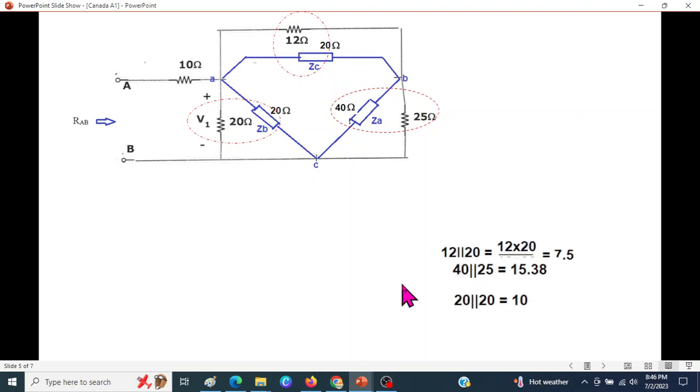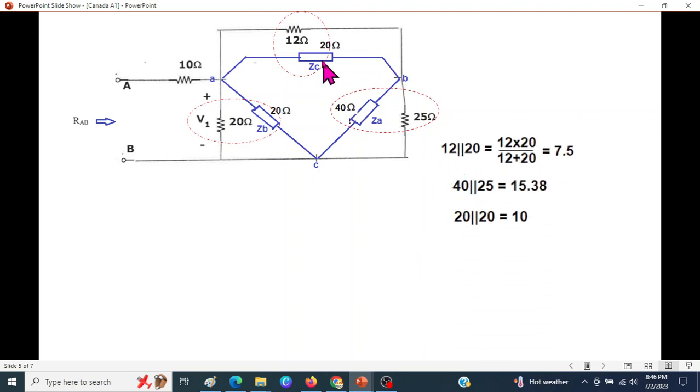Solving them in parallel, I hope you know the formulas. I am just showing one: 12 parallel 20 is 12 into 20 divided by 12 plus 20 is 7.5, so this will be 7.5. Same way, 40 parallel 20 will be 15.38, and 20 parallel 20 will be 10.